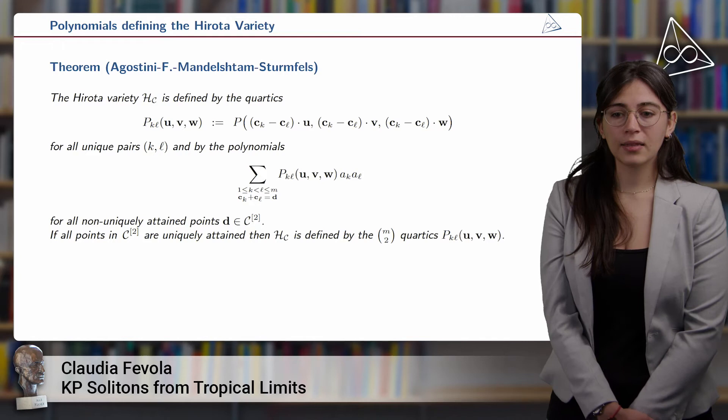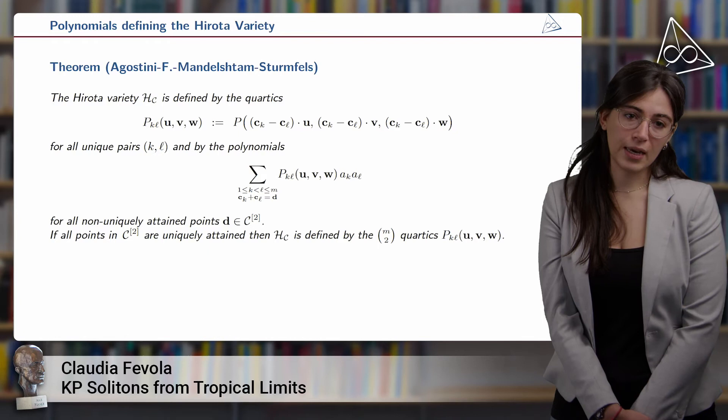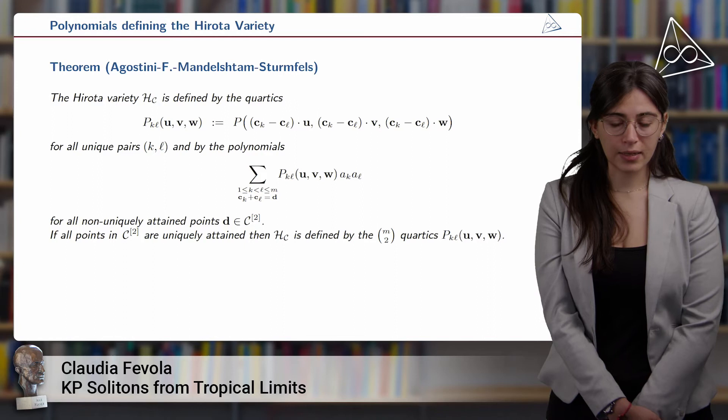Our theorem gives explicit equations for the Hirota variety. The Hirota variety is defined by quartics of this type any time KL is a unique pair, and by sums of the p_{KL} polynomials times A_K A_L — where A_K and A_L appeared in the degenerate theta function — for all non-uniquely attained points d in C_2. Moreover, if all points in C_2 are uniquely attained, then h_C is defined exactly by N_2 quartics p_{KL}. This is the case when the Delaunay set is a simplex.